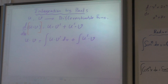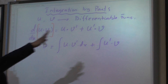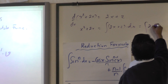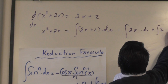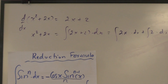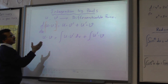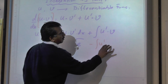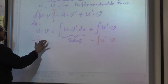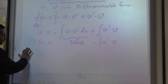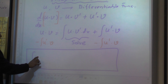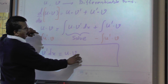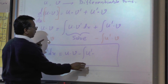So it's the same thing: x² + 2x equals integral of 2x dx plus integral of 2 dx — just distributing the integral sign. Then I solve for this integral by subtracting, and after that you get the formula. Your main formula, integration by parts, is: integral of u times v' dx equals u times v minus integral of u' times v dx.